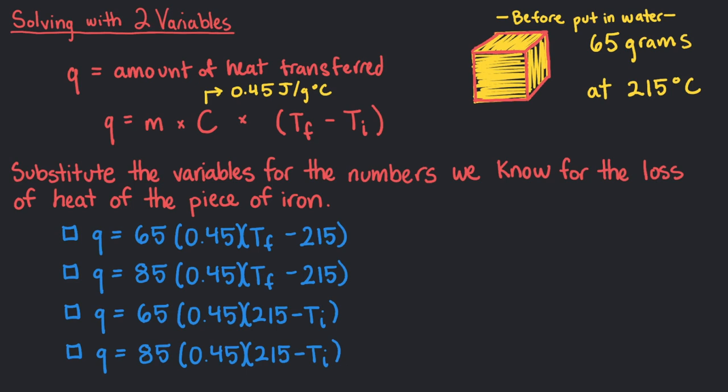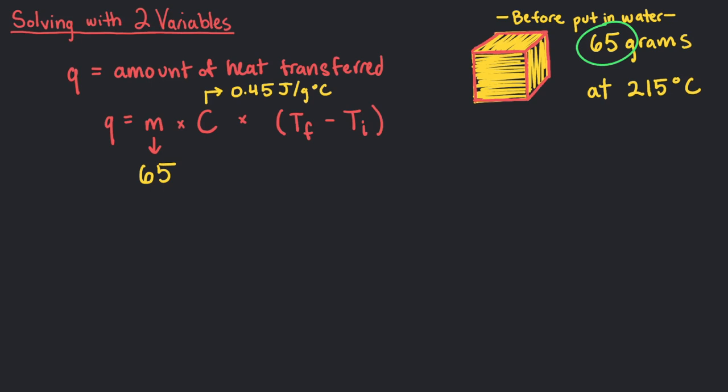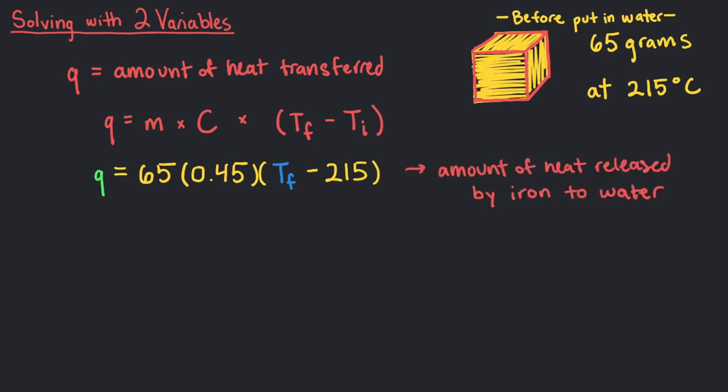We know the mass of the iron is 65 grams, so we can just use that for m. The specific heat capacity is 0.45 joules per gram degrees celsius, and the initial temperature is 215 degrees celsius. We want to find the final temperature, and we don't know how much heat is being released by the iron into the water.